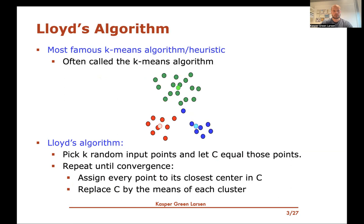In the previous video we also saw Lloyd's algorithm, which is probably the most famous or simplest algorithm for k-means clustering — also called the k-means algorithm in a lot of literature. The basic idea is this simple strategy where you pick k random input points as your initial centers, and you repeat two steps: assign every point to the closest center, putting them in a cluster together, then replace all the centers by the means of these new clusters. You repeat this process until it converges.